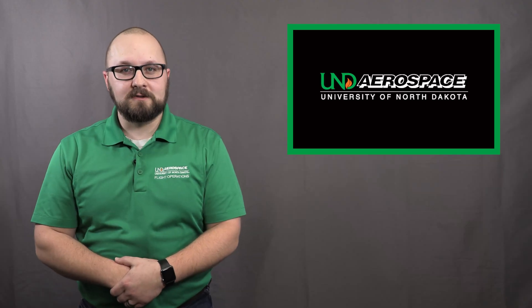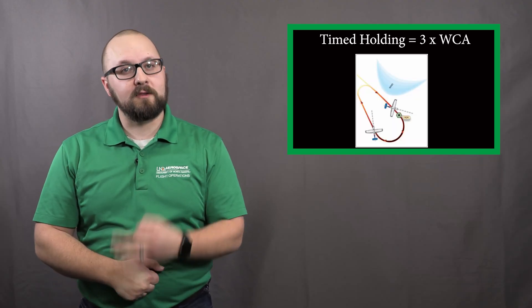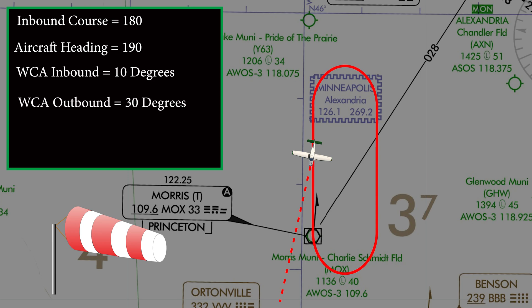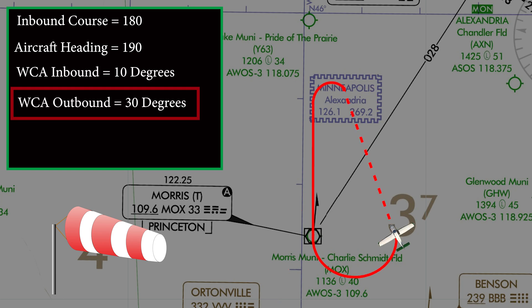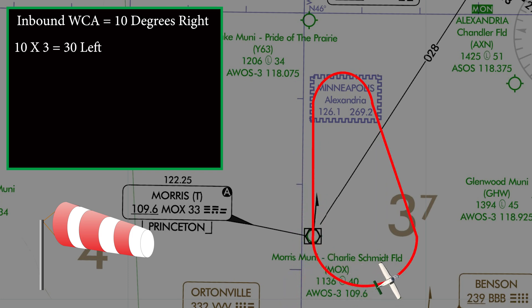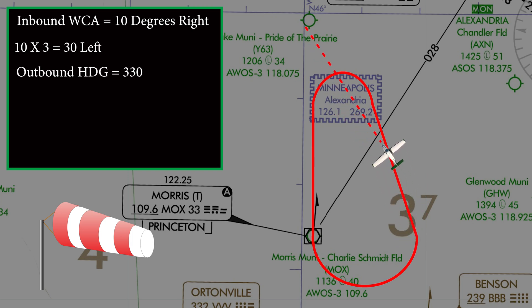If ATC clears you to fly a timed hold, you multiply your wind correction angle by 3. This means that if your inbound course is 180 and you are flying a heading of 190, you should correct your outbound heading by 30 degrees. A common mistake is to turn the wrong direction for the wind correction needed. In our example, we needed 10 degrees to the right on the inbound, which means our outbound we need to fly a calculated 30 degrees to the left. So if our outbound course is 360, we now need to fly a heading of 330 for proper wind correction.